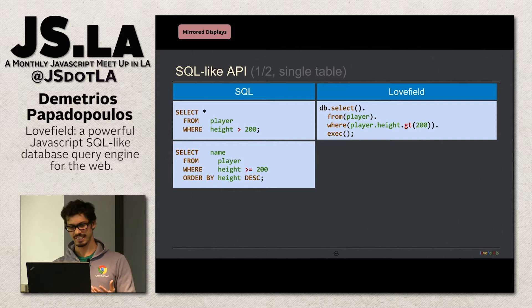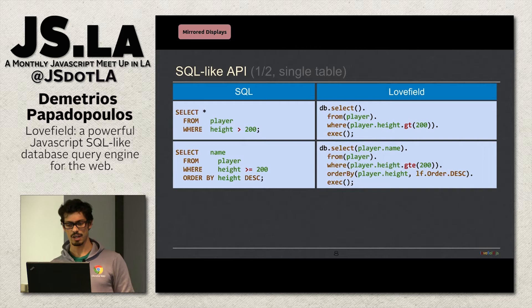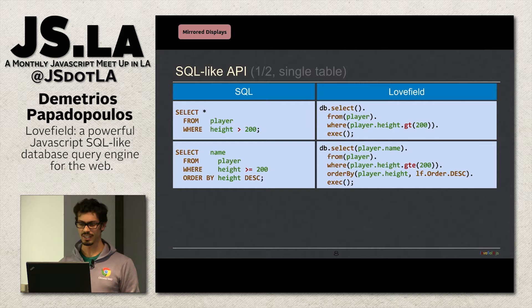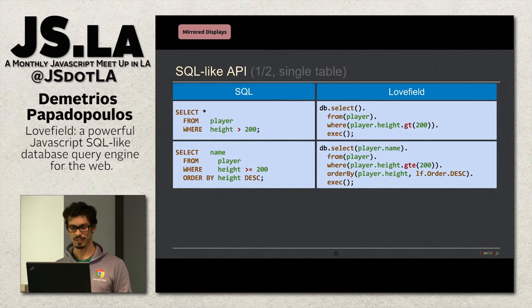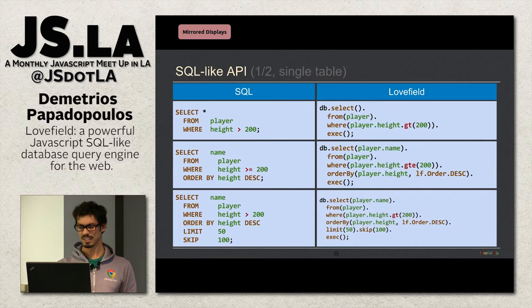Another query: selecting a specific column and ordering by height descending. In Love Field, select now receives an argument — player.name — from the generated schema object. Then orderBy(player.height, lf.Order.DESC). LF is the namespace used for operators to avoid polluting the global namespace. There's also a query with limit and skip — very similar syntax with limit(50).skip(100) — which you'd use to implement pagination.